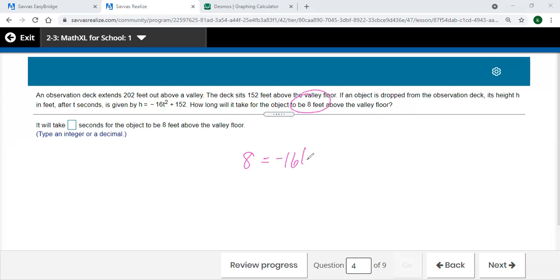So we're trying to solve the equation that looks like this: when does the height equal 8? All the other information in there is part of this gravity coefficient here, and the 152 is the height above the valley floor. So we're trying to solve this.